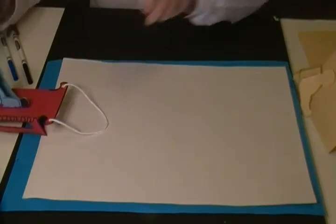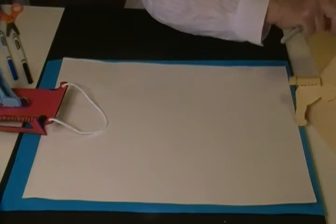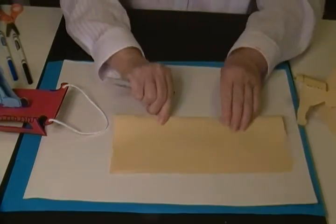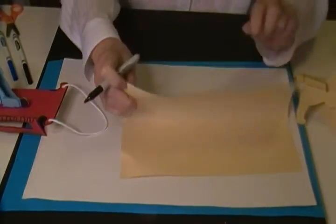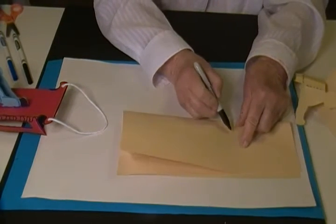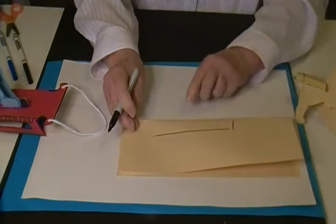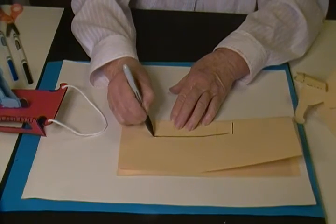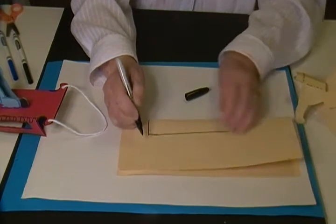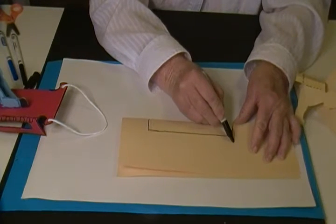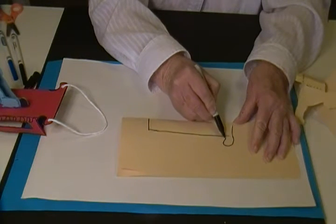To make the little sled, I started with my paper folded and drew a rectangle to start with. Then for the handle, I drew a straight line out and curved back around.